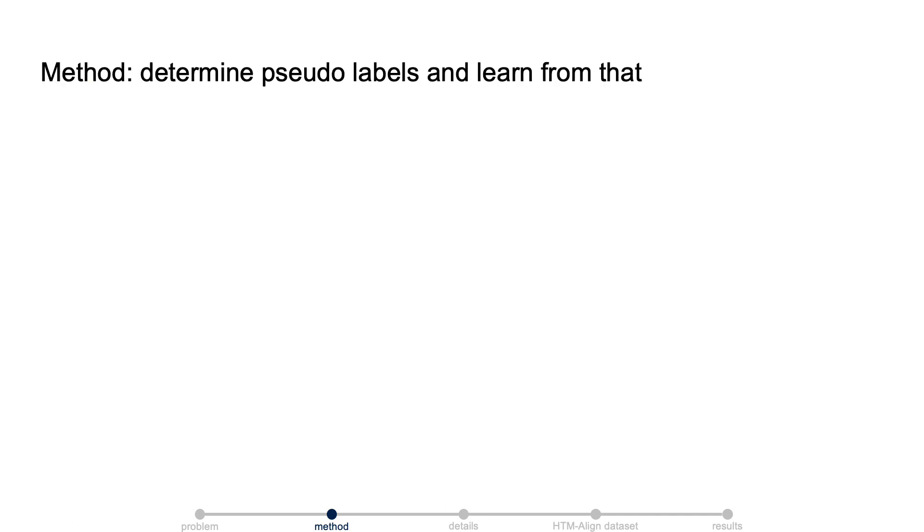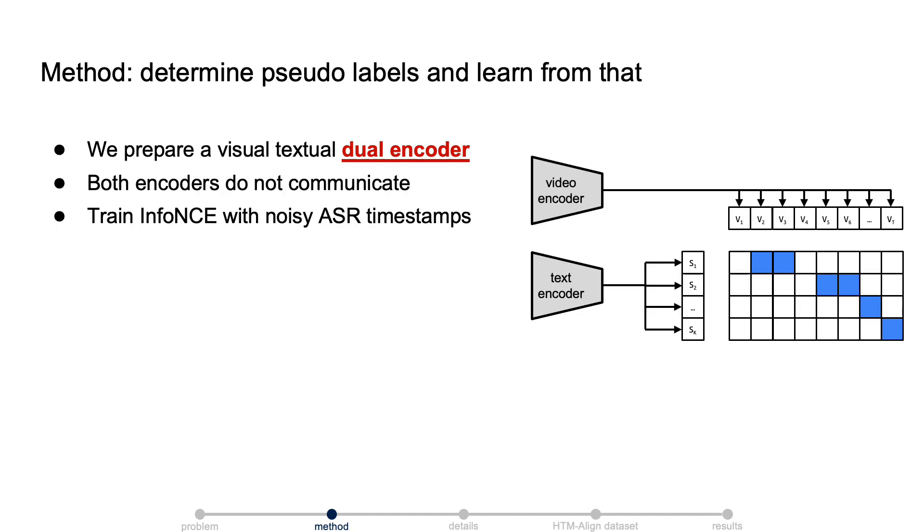The main idea of our method is to determine pseudo-labels to approximate the ground truth labels and learn from that. Our model has two components. The first component is the visual-textual dual encoder. In this component, the video and text encoder do not communicate, and we train them with an infoNCE loss on the noisy ASR timestamps.